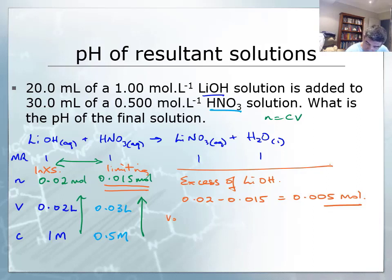Because I have 0.005 moles, my final volume is equal to 20 plus 30, which is 50 mils, because I've added both of these solutions together. So now I have a final volume of 50 mils.